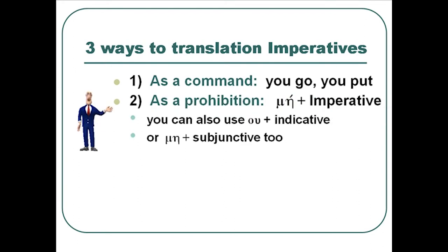The second usage is with the negative, mē plus the imperative. You realize that mē is used with the moods, and ou with the indicative. And so mē with the imperative is called a prohibition. Thou shalt not kill. Thou shalt not steal. Those kind of things are prohibitions. Now you can also do the prohibition with ou plus the indicative, or even mē with the subjunctive. So there's actually three ways of stating prohibitions. But one of them is mē with the imperative.